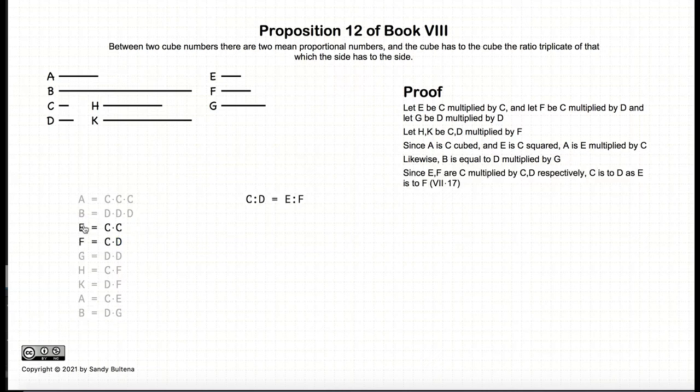So we have that e is to f as c is to d. So c is to d is equal to e is to f. And we also have that c is to d is equal to f to g.